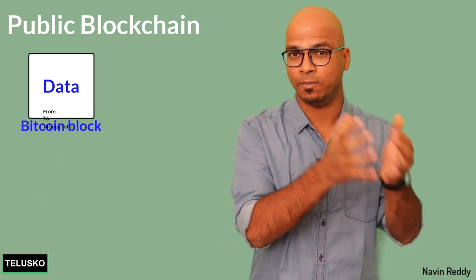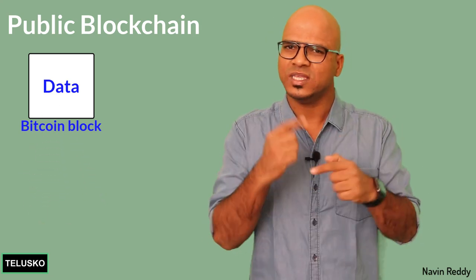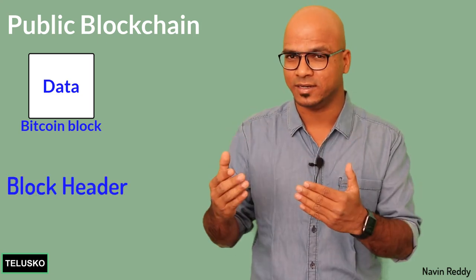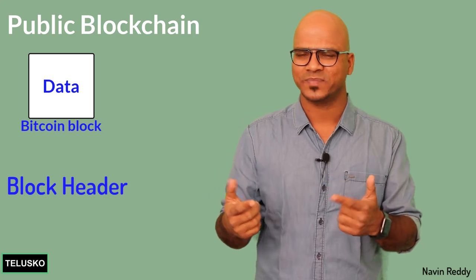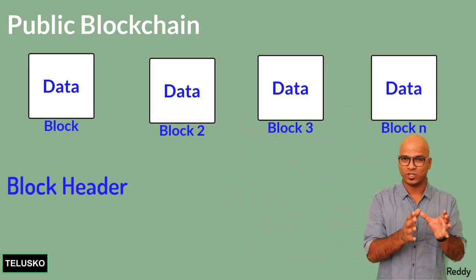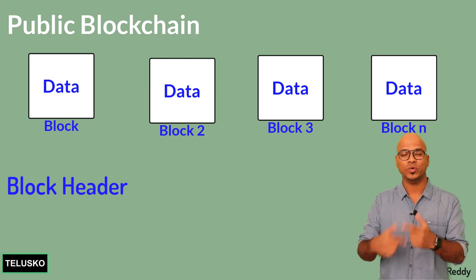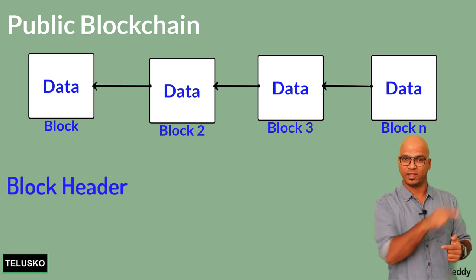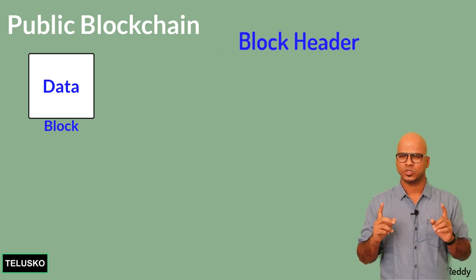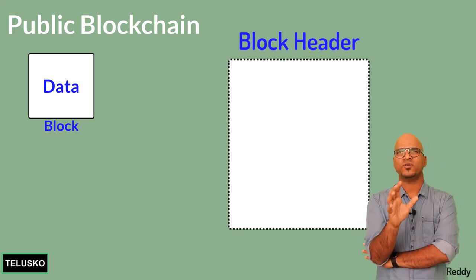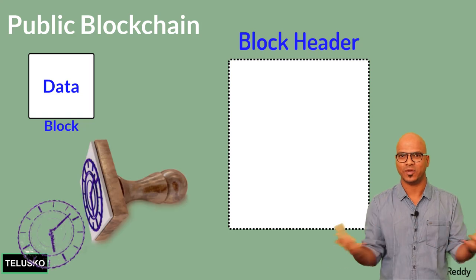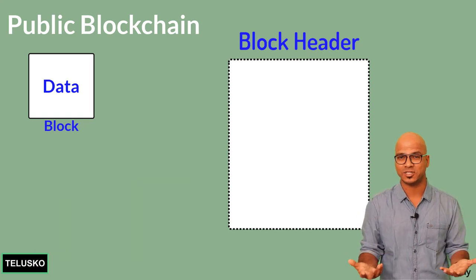Along with the transaction data, each block has a block header. We need a block header because we'll have a lot of blocks, and we need to differentiate between them and create the chain. That's where the block header comes into picture.